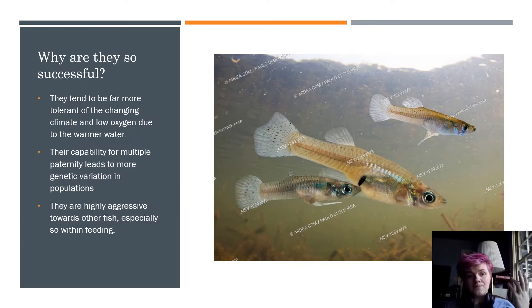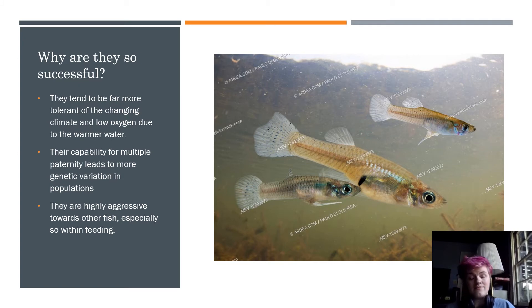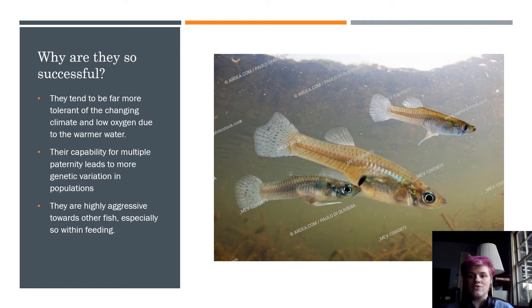So why are they so successful? They're successful because they're extraordinarily hardy. They can survive extreme heat and low oxygen. They have tons of genetic variability because of multiple paternity — they have multiple fathers, and those multiple fathers contribute sets of genetics to the female, who can then draw on whatever comes in. You end up with all these different lines with great variance, which makes them able to rapidly adapt to new environments and deal with climate change.